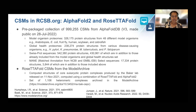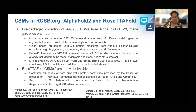The current set of computer structure models on rcsb.org consists of a prepackaged collection of about a million models from AlphaFoldDB that include model organism proteomes, global health proteomes, Swiss-Prot sequences, and main sequences. The RosettaFold computer structure models from the Model Archive include a set of about 1,100 heteromeric complexes corresponding to core eukaryotic protein complexes modeled using a combination of RosettaFold and AlphaFold2. These computer structure models collectively cover the entire human proteome and those of model organisms, selected pathogens, and organisms relevant to bioenergy research.